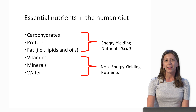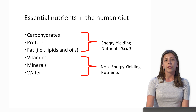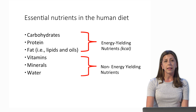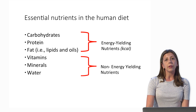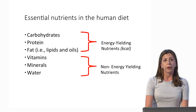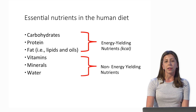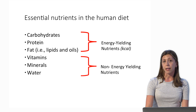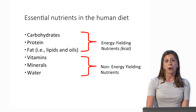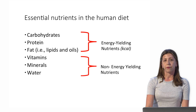There are six essential nutrients in the human diet. The first three — carbohydrates, protein, and fat — are termed macronutrients because we need these three nutrients in the largest quantities in our diet, and they produce energy in the form of calories. Vitamins, minerals, and water are the three other essential nutrients; vitamins and minerals are often defined as micronutrients. Vitamins, minerals, and water are non-energy-yielding nutrients, meaning they don't provide us with calories. But collectively all six are essential — we need them in the human diet every single day.